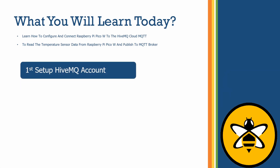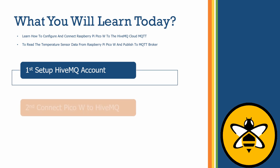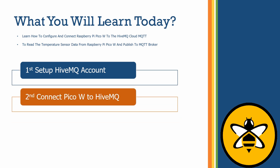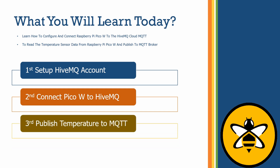The agenda of this video: first, we are going to set up a HiveMQ account and get the credentials — username, password, and the endpoint to connect with MQTT. Next, we are going to write the code for connecting the Pi Pico W with HiveMQ. In the last step, we are going to read the temperature sensor value and publish it every two seconds, then read the same on the HiveMQ portal. Let's get started!